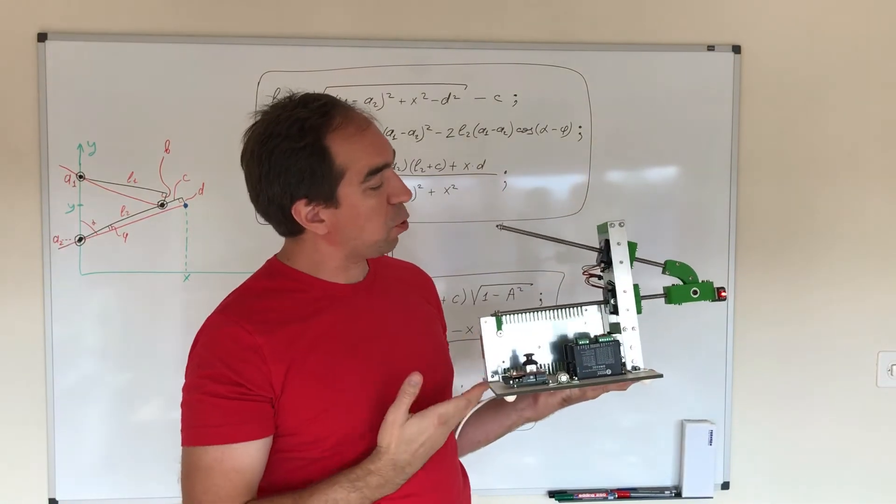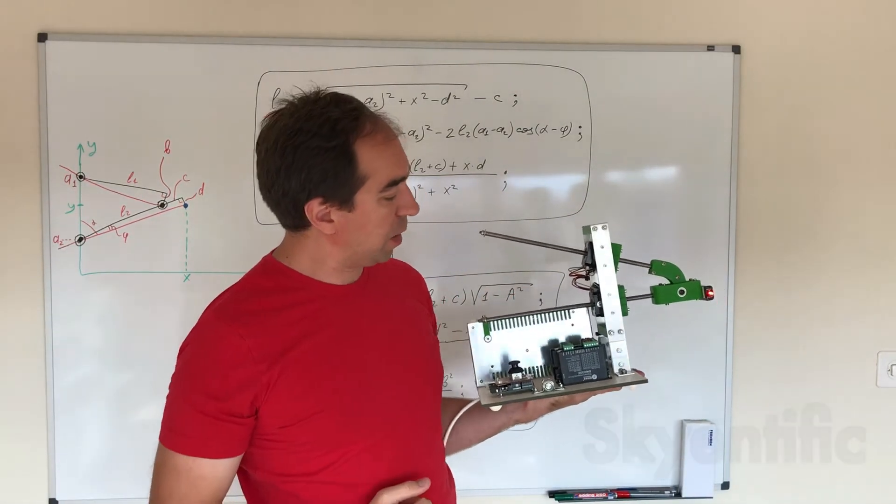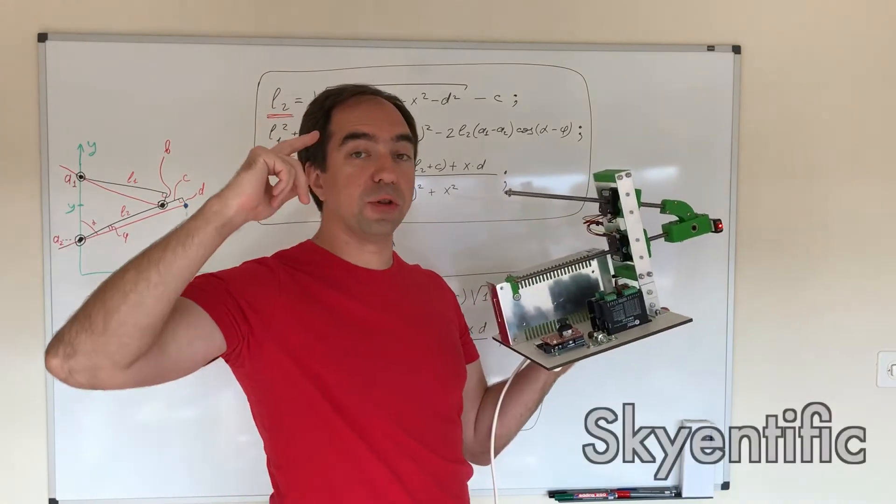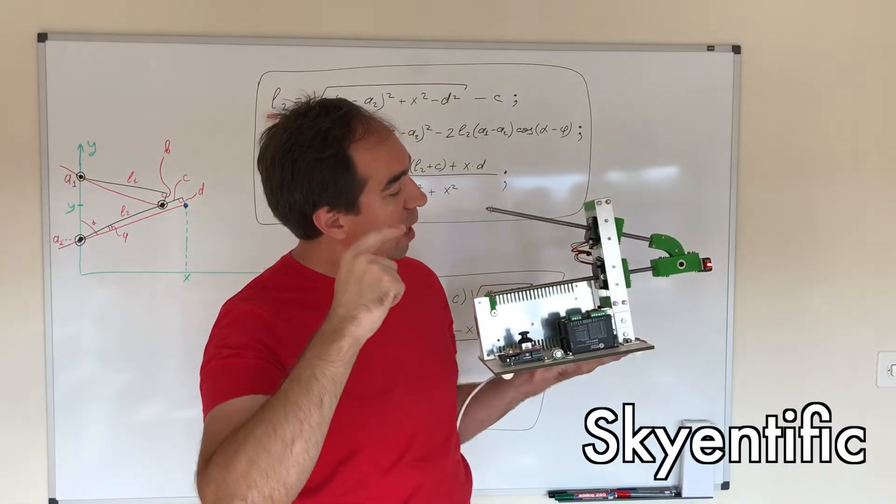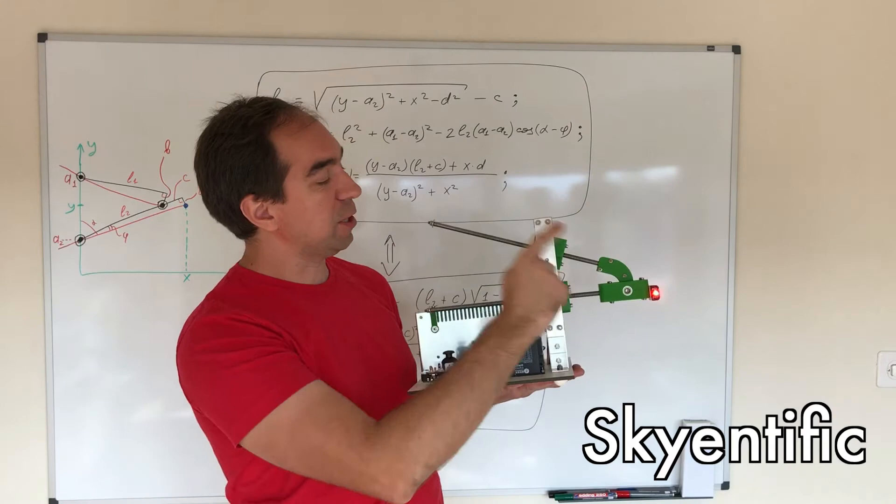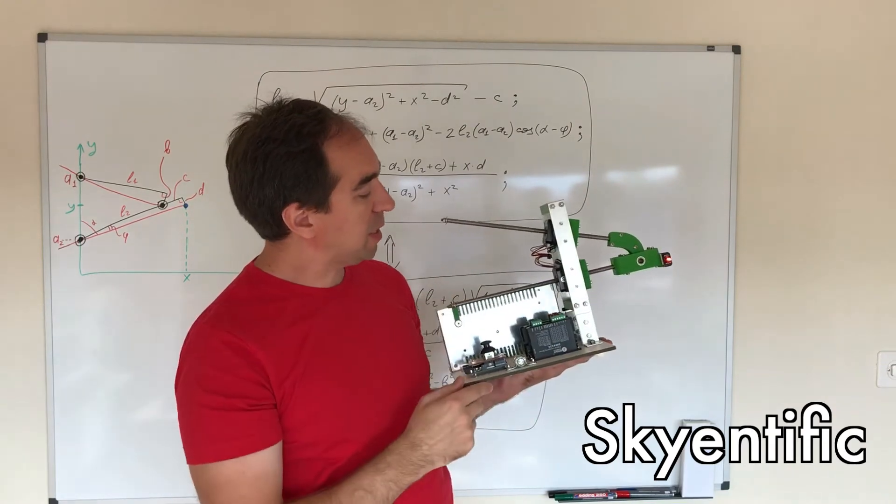This is the second video about my 30 degrees of freedom robotic arm. In this video, I'm going to explain how I program it and also show some results of light painting.